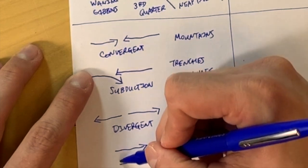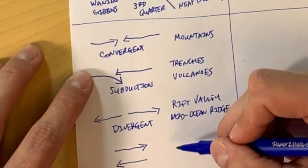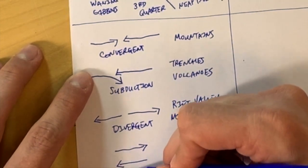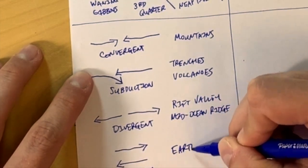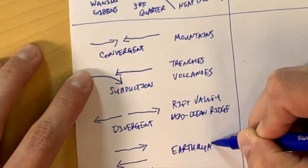And then lastly, if plates are sliding by each other, these are called transform plate boundaries. And these plate boundaries, when they slide past each other, create earthquakes.